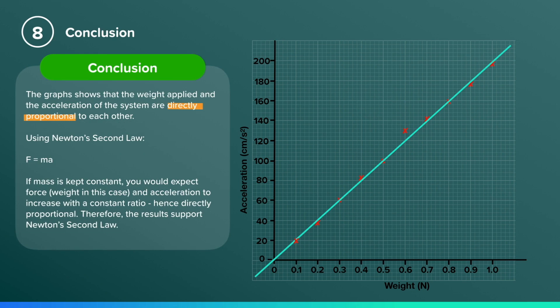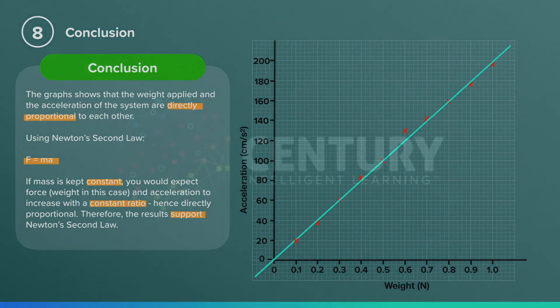Using Newton's second law, F is equal to ma. If the mass is kept constant, you would expect the force, which is the weight applied in this case, and the acceleration to increase with a constant ratio. Hence, directly proportional. Therefore, the results support Newton's second law.